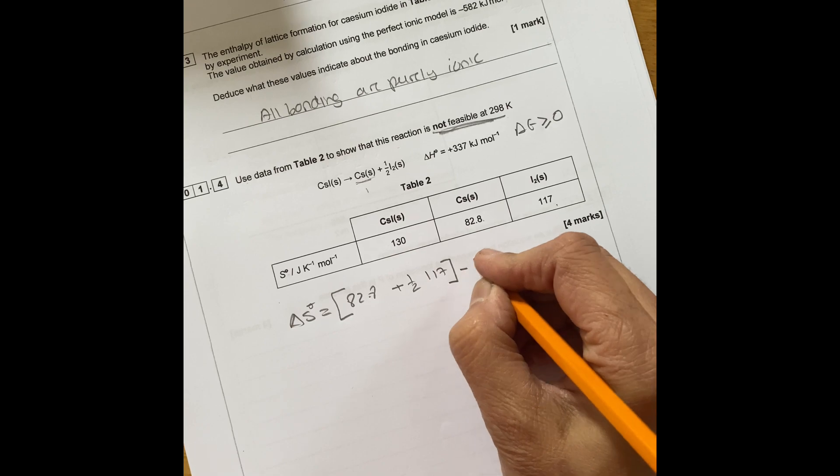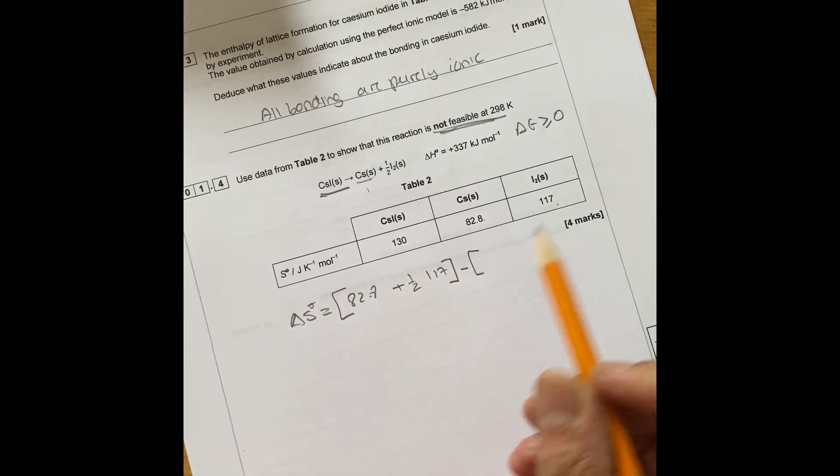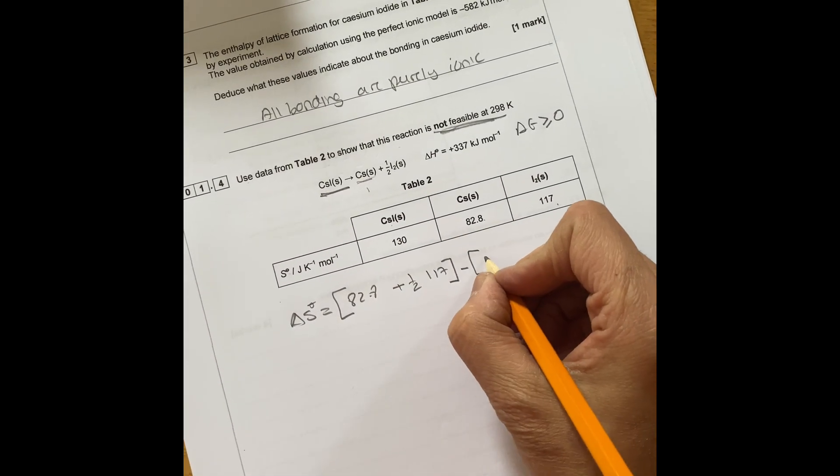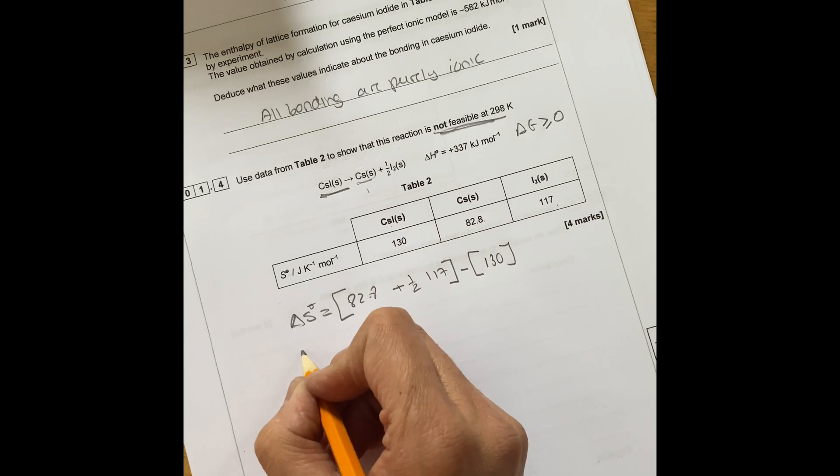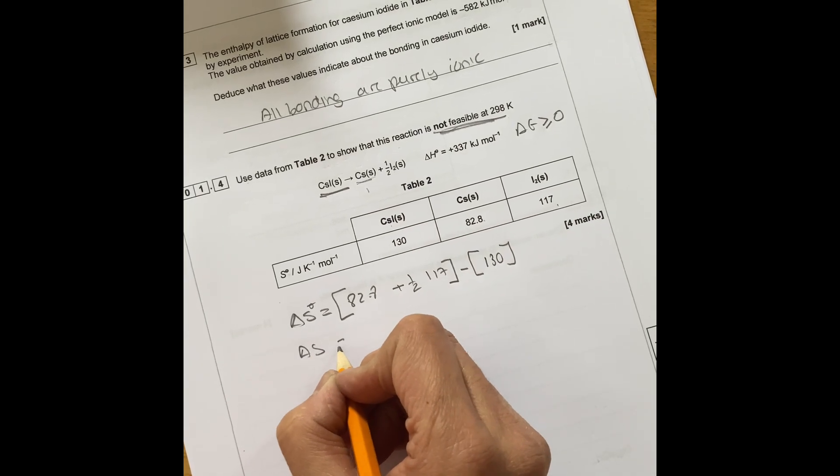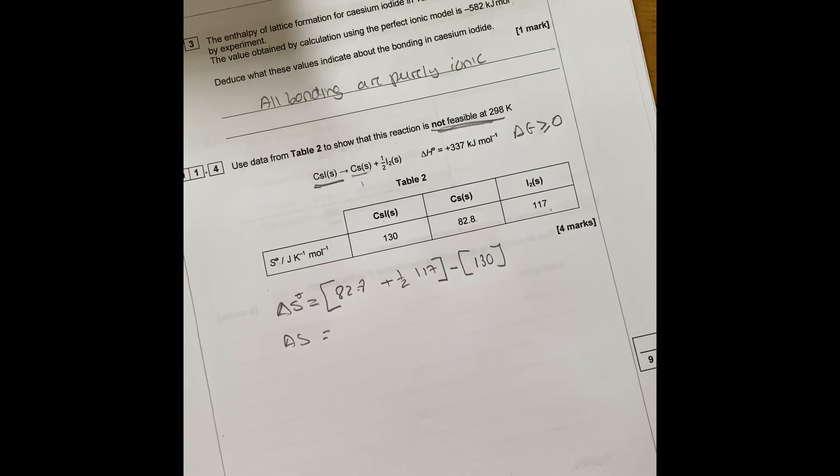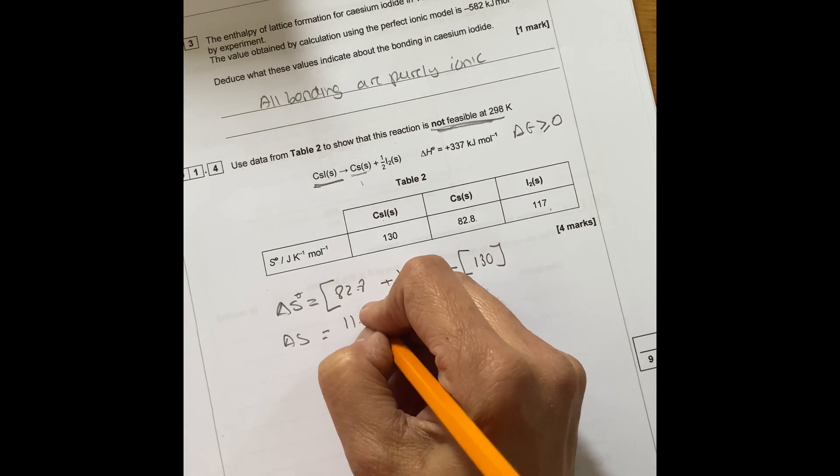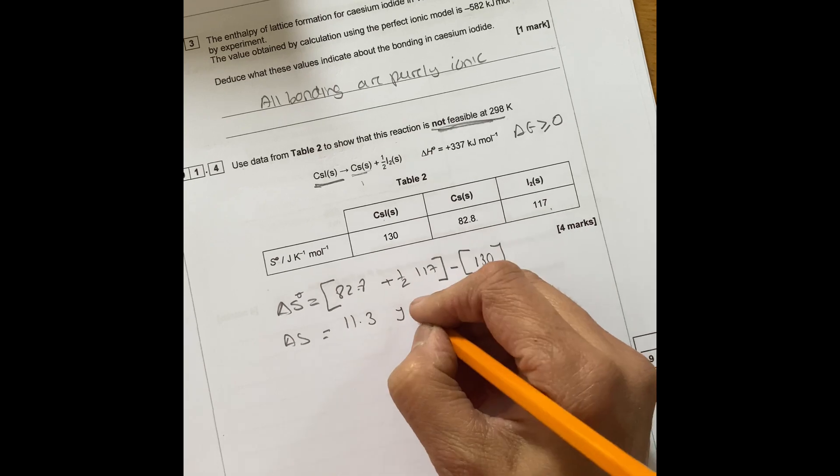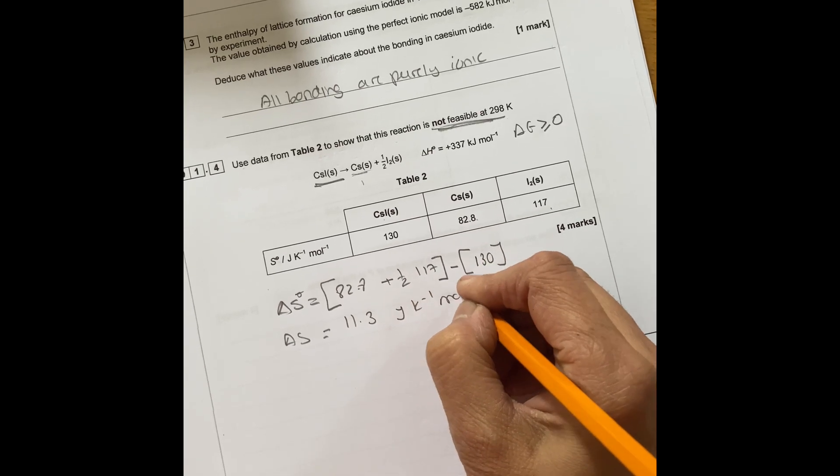That's your products minus your reactants, which is this bit here, minus 130. So you work out delta S. So if you work through delta S, you will notice that you end up with 11.3 joules Kelvin minus one mole minus one.